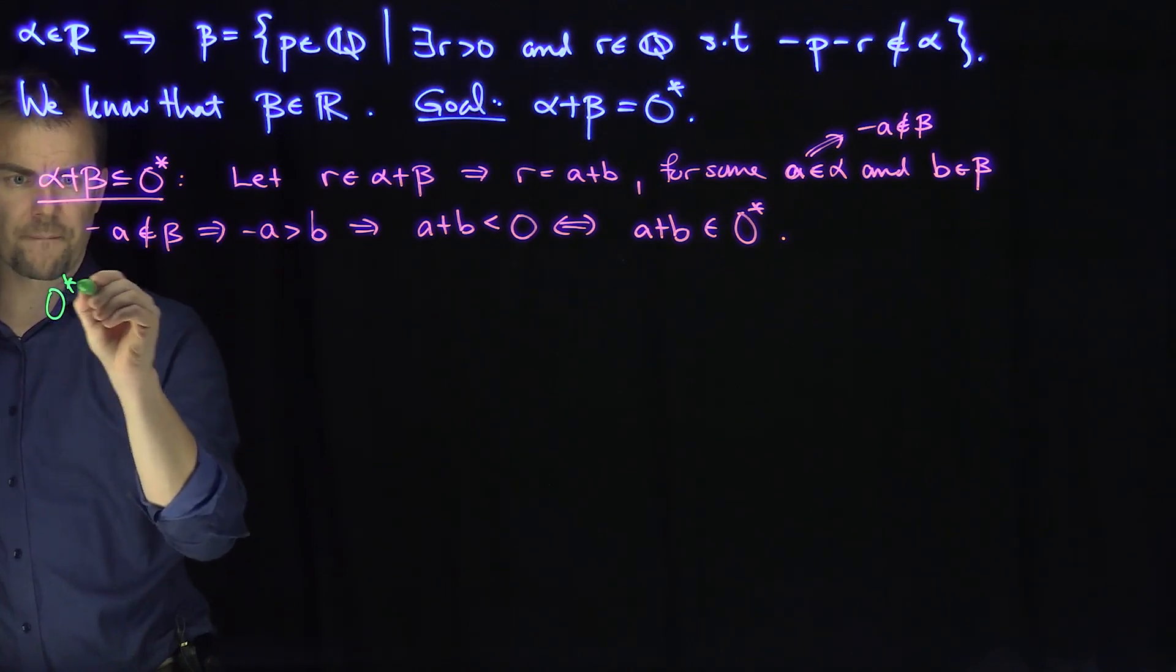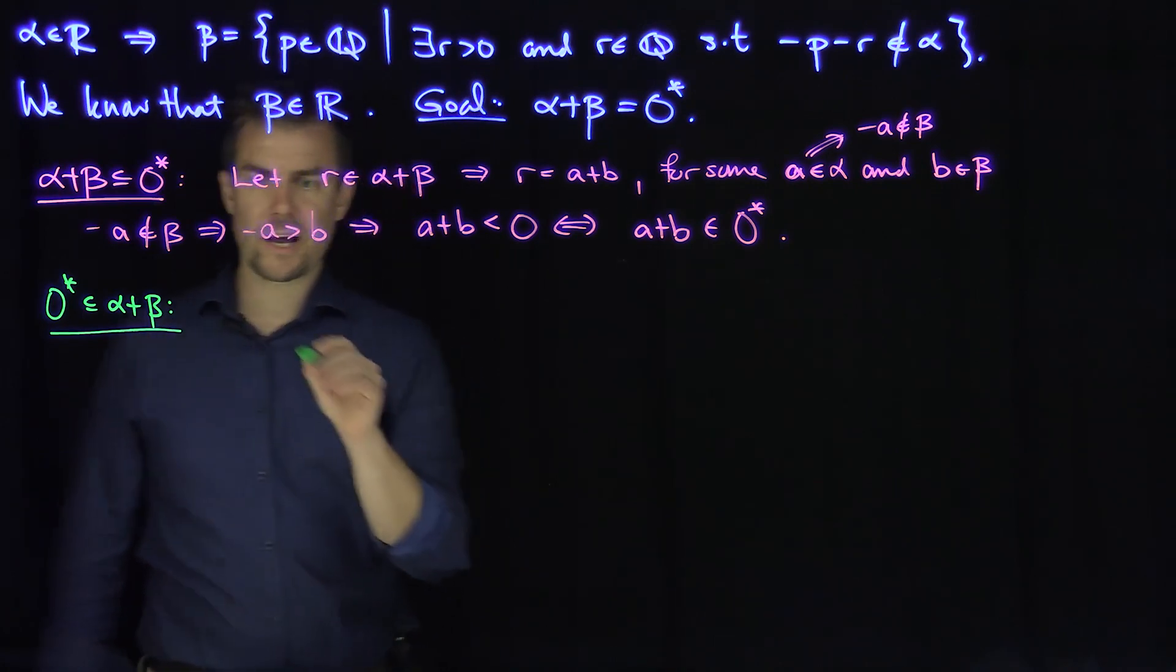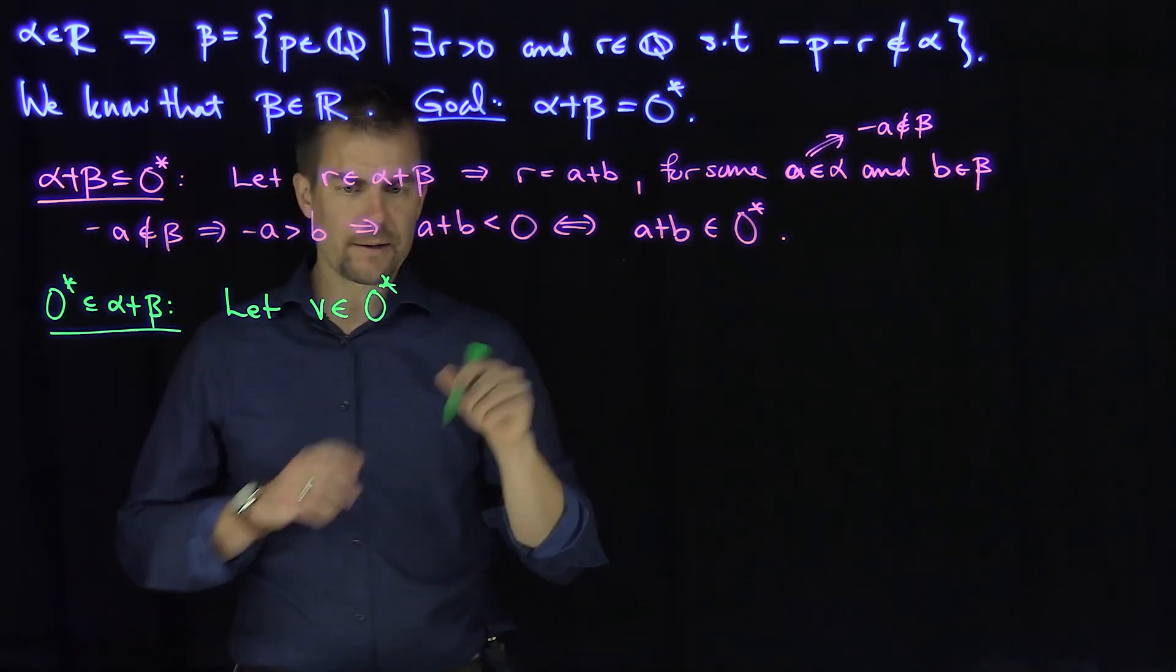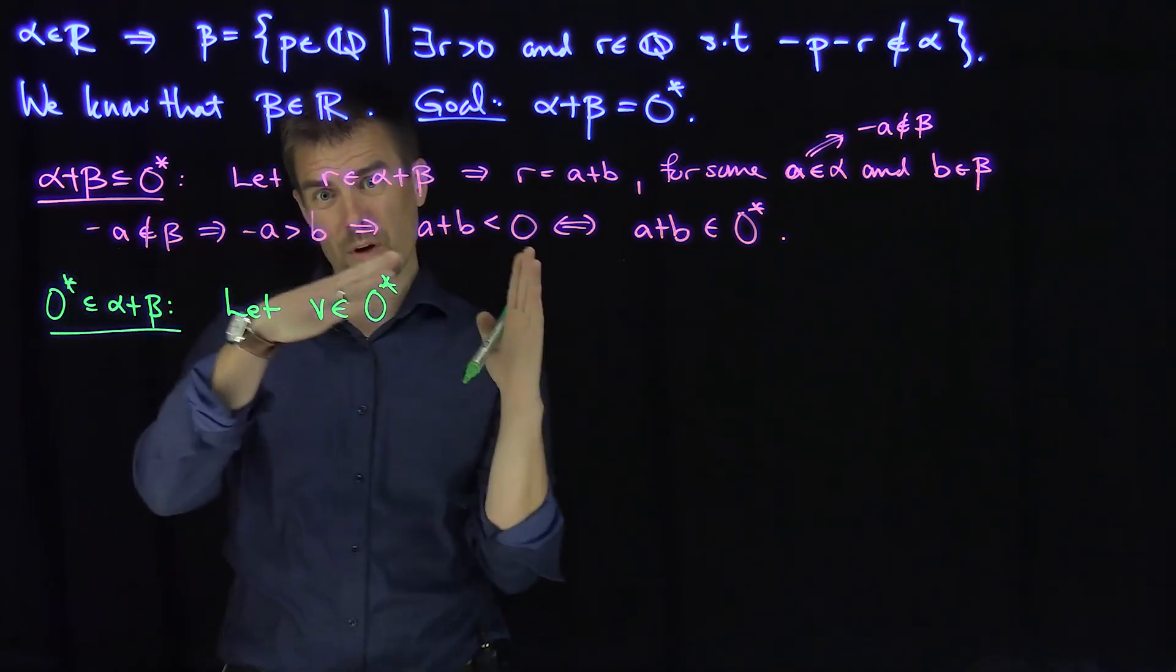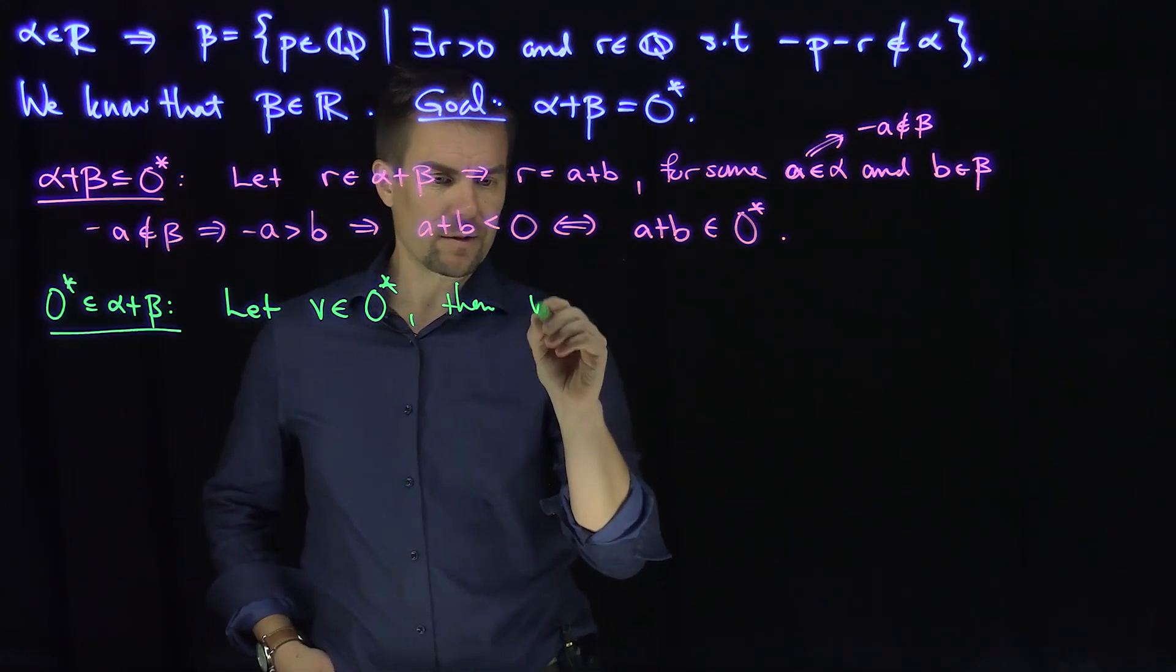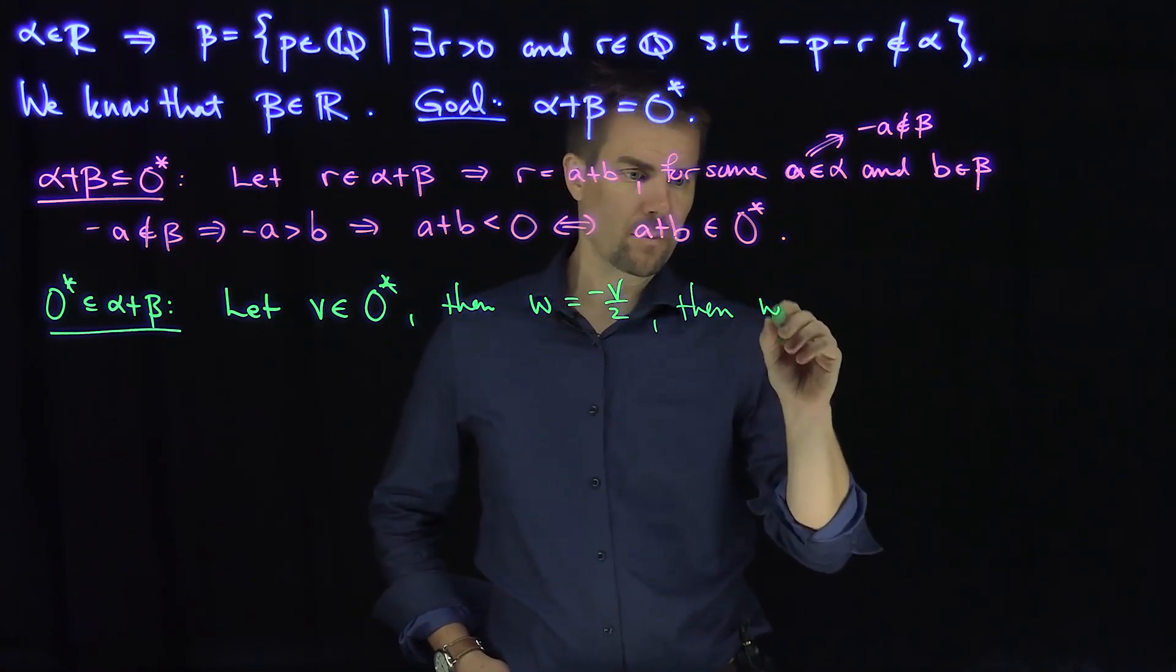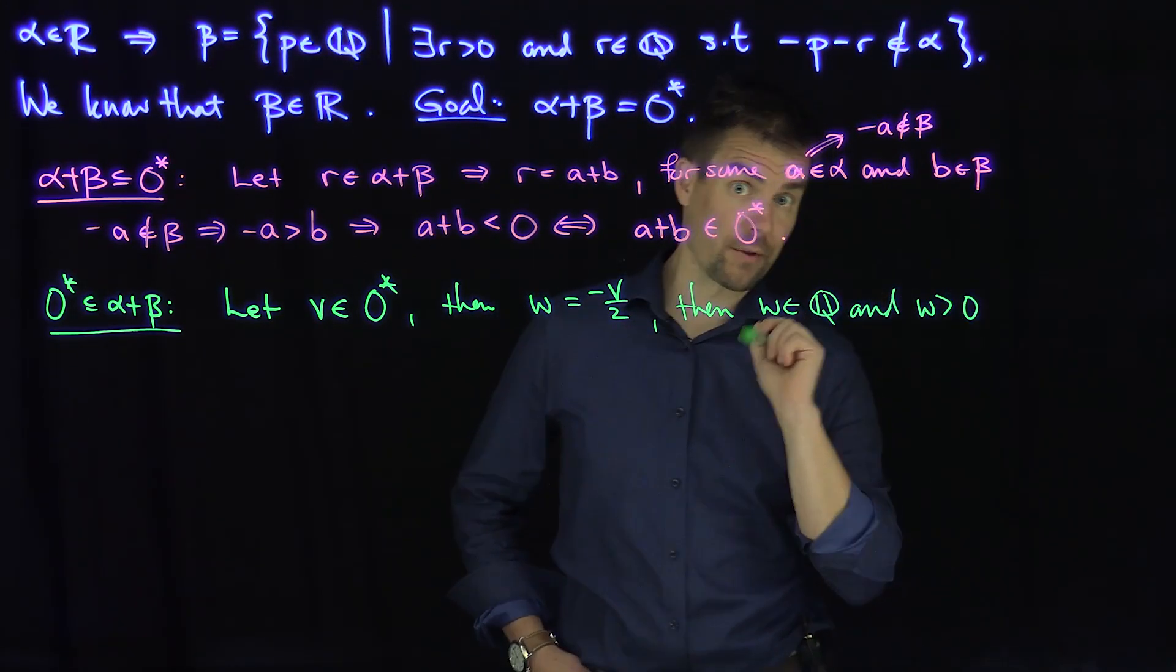The opposite inclusion is that zero star is contained in alpha plus beta. This is substantially more complex to do. So what we're going to do is let v be in the zero cut. That means that v is a rational number, essentially one of the rational numbers that's less than zero. Then if we let w be negative v over two, then w is greater than zero. W is in Q and w is greater than zero. This is an important property.